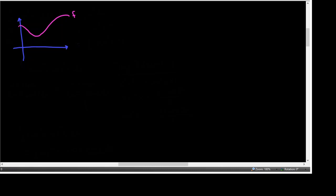We could call the original point on this curve point P, where P has coordinates (c, f(c)). That's going to be the same. And we'll make another point Q, a movable point. C will be a constant, so that's going to stay c — whatever it is, like c equals 2. But Q is a movable point, and its coordinates will be (x, f(x)), because x can change. So instead of c plus delta x, we're just calling that movable point (x, f(x)).